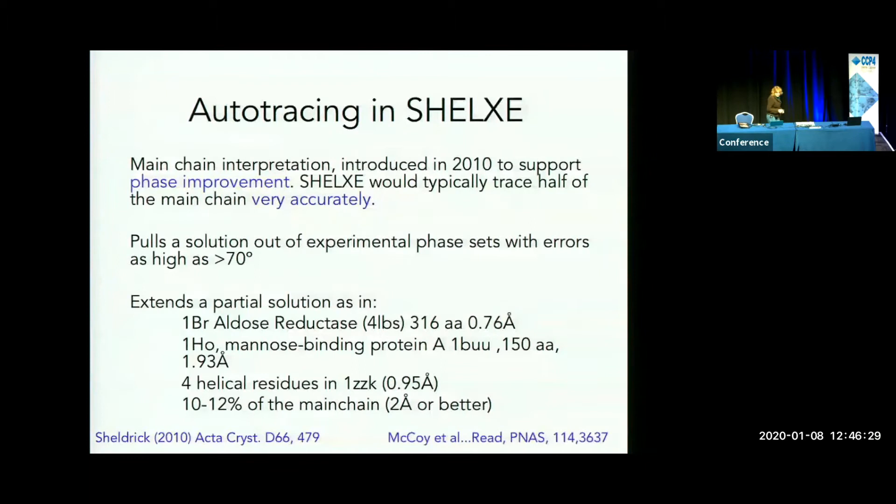I wish we knew as well as the Phaser people know for molecular replacement how to predict whether they are going to solve something depending on their model and their data. These are more examples and heuristics, and I think we can still get better.